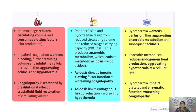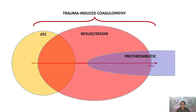Acidosis at a pH of 7.1 is very detrimental — it reduces clotting factors 5, 10, 10a, and 7a. Acidosis also inhibits endogenous heat production, worsening hypothermia. Hypothermia in turn worsens perfusion and promotes anaerobic metabolism. For each degree decrease in temperature, there is a 10% decrease in coagulation factors. This all contributes to a lethal triad, also known as the bloody vicious cycle.